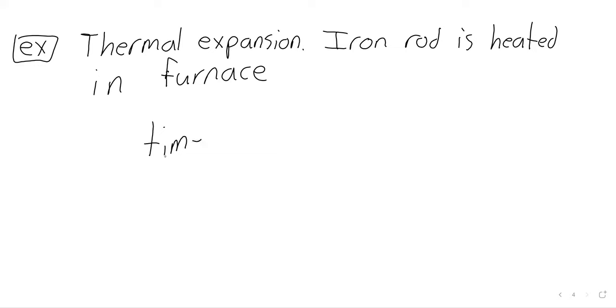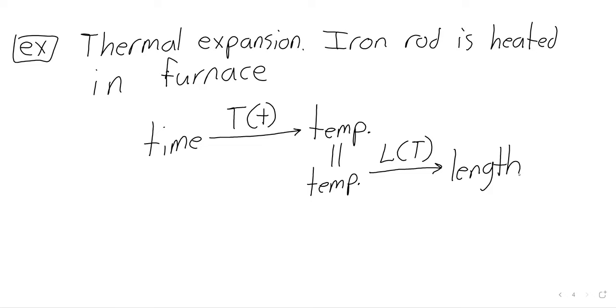So if we know how long the rod's been in the oven, we can use Newton's law of heating to find the temperature. Thermal expansion is a simple process, it's linear. If we know the temperature of the rod, we can find the length of the rod. We have these two different functions, one of which takes time as an input and outputs temperature, one of which takes temperature as an input and outputs the length.